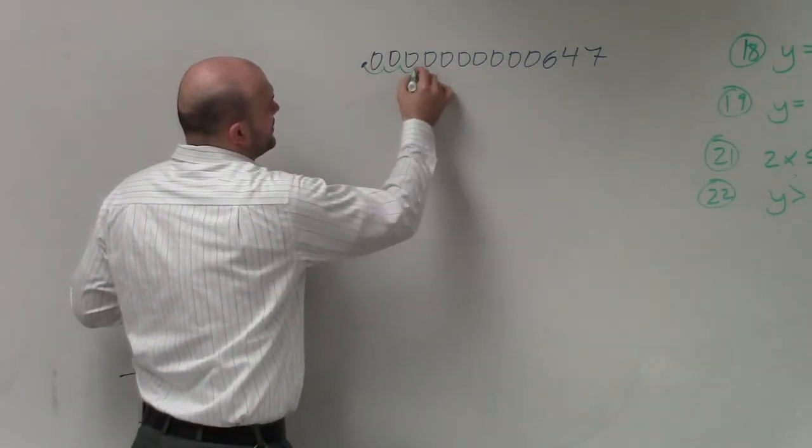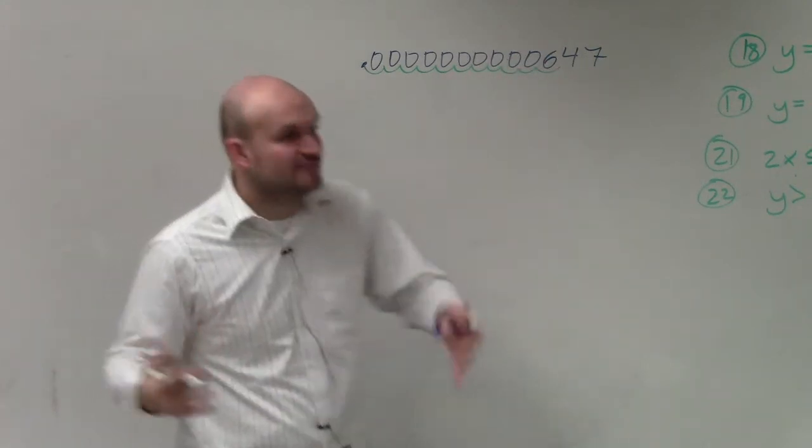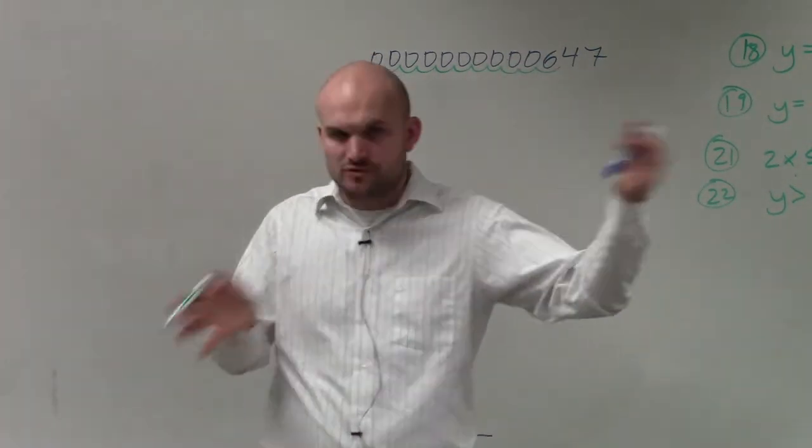1, 2, 3, 4, 5, 6, 7, 8, 9, 10, 11. We want to go between the 6 and the 4 because that's going to be 6.47, which will be between 1 and 10.